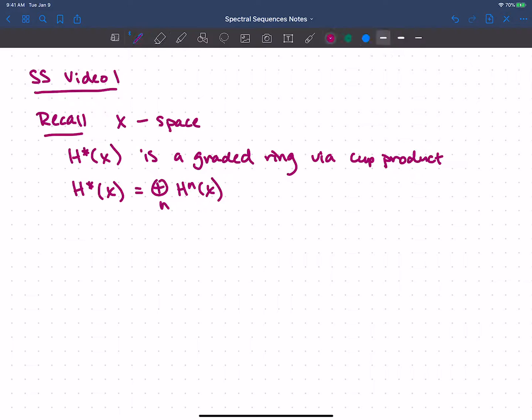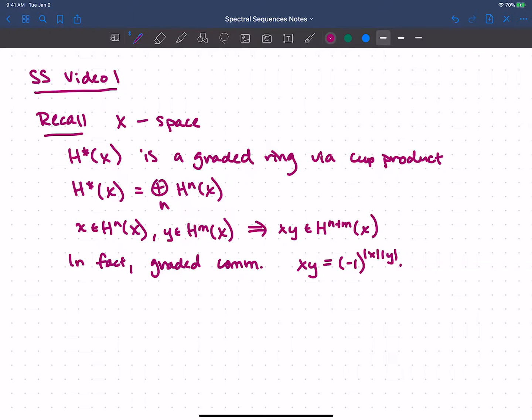Well, if I take some little x in the nth cohomology and some little y in the mth cohomology, then the cup product should land in the n plus m cohomology. And in fact, this isn't just a graded ring, it's what we call graded commutative, because this cup product satisfies this nice property. If I multiply X times Y, well, I can exchange the order at the cost of a sign, and that sign is just negative one to the product of the degrees of X and Y, so here n times m, and then I can swap the order. So this leads us to study graded rings and modules, which we'll talk about in the next video.